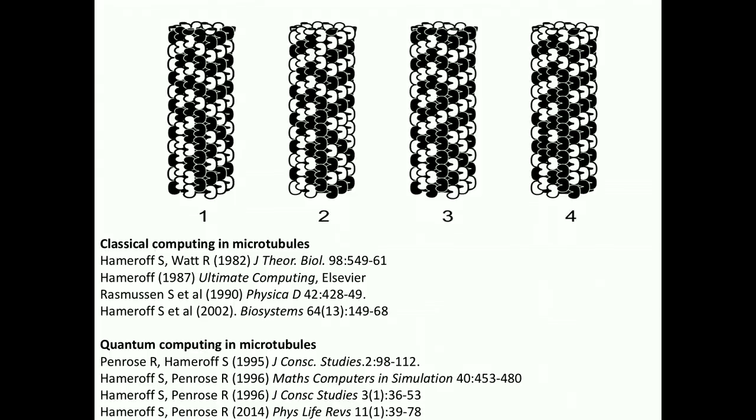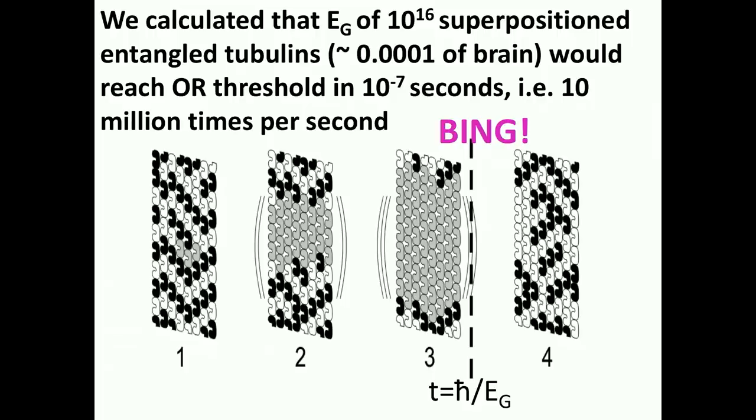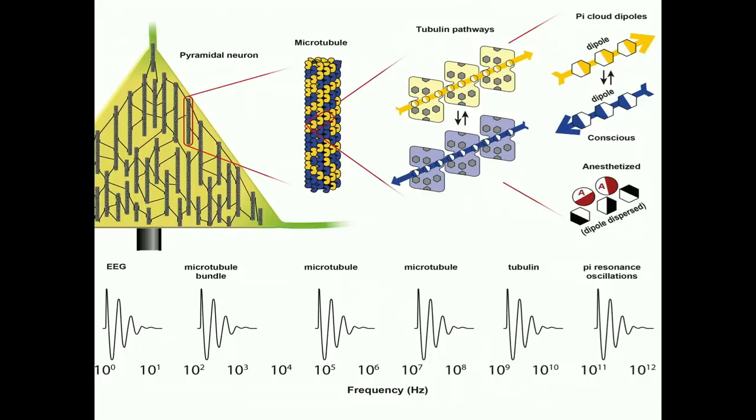So microtubules can process information. I spent a lot of time modeling information processing in microtubules, and then later quantum computing in microtubules with Roger. For example, we calculated that the e sub g of 10 to the 16th superposition entangled tubulins, about one ten thousandth of the brain, would reach threshold in about a ten millionth of a second, ten million times per second for a conscious moment. So not just one microtubule, but many entangled throughout the brain. And basically the idea is that this can happen at different frequencies, and moving from left to right we're going faster and smaller inside the cell, into the microtubules, into the quantum realm.